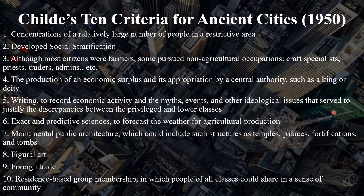Also, before continuing on, I want to revisit V. Gordon Childe's 10 criteria for ancient cities. Childe developed these criteria in 1950, discussing the development of urban centers in the ancient Near East. Subsequent scholars have argued that Childe's criteria may not fit as well for cities outside of the ancient Near East, such as places like the Americas. However, I think that Childe's criteria are very useful in discussing ancient Near Eastern and ancient Mediterranean cities, and therefore we'll be using them in this lecture and throughout the course.